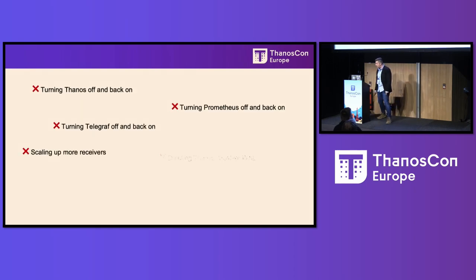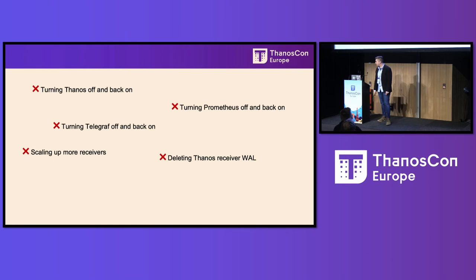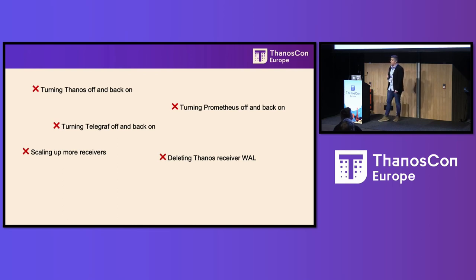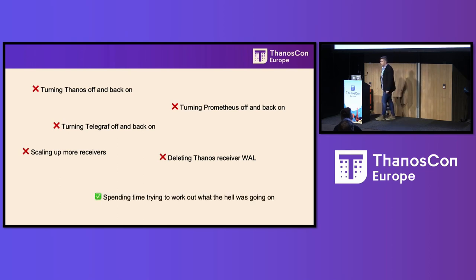Back to the drawing board. As all good Kubernetes operators, we switched it off and back on again — that didn't fix it. We tried restarting Prometheus on the hosts — didn't fix it. We tried restarting Telegraf on the hosts — didn't fix it. We got really desperate and started deleting data in the Thanos receive files — that didn't fix it. The metrics just came back all out of bounds, all kind of unexplainable.